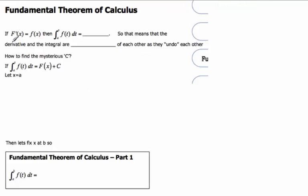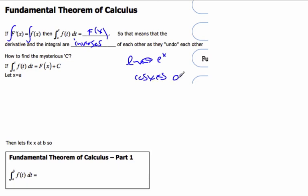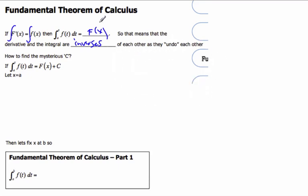Here is the fundamental theorem of calculus. If the derivative of capital F equals little f, then the integral of little f is capital F of x. This means the derivative and the integral are inverses of each other — they undo each other. Similarly to how ln is the inverse of e, or cosine versus arccosine, derivatives and integrals undo each other. In the past we've always had to add the constant c, which can be any value unless we're told a specific point.